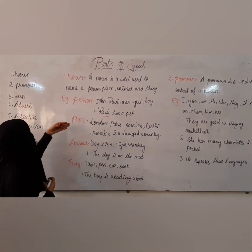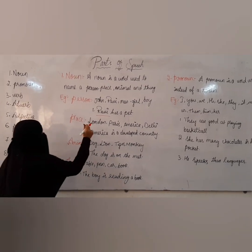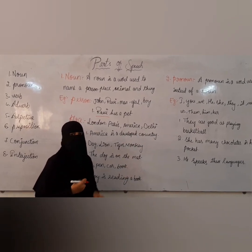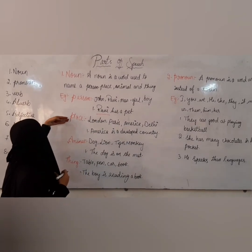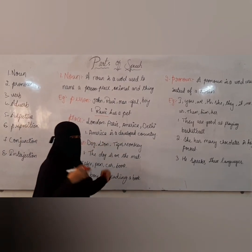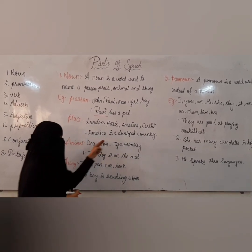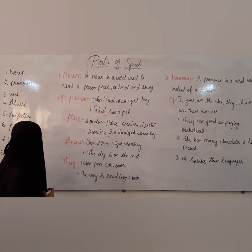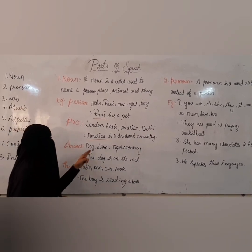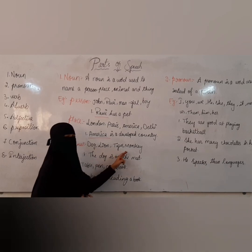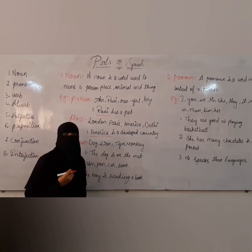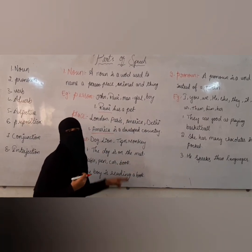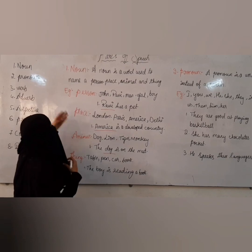Now let's see some examples of place noun: London, Paris, America, Delhi, and so on. Let's see one more example: America is a country. In this sentence, America is a place noun. And let's move on to animal noun: dog, lion, tiger, monkey, and so on. Let's see one more example: The dog is on the mat. In this sentence, dog is an animal noun.